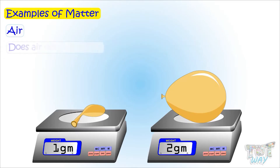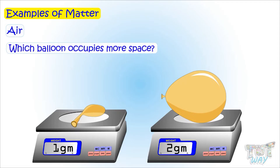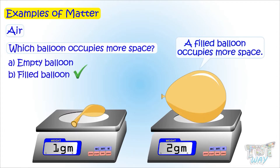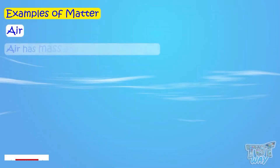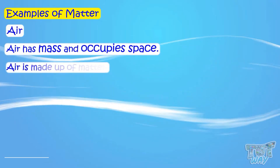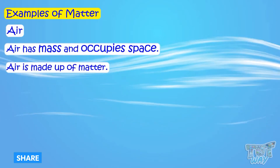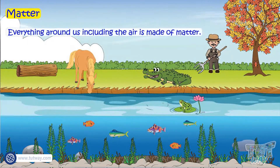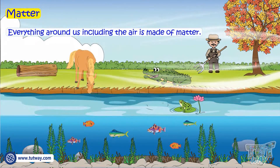Now let's see if air occupies space. Which balloon occupies more space — an empty balloon or a filled balloon? A filled balloon occupies more space. So it means that air occupies space too. So air has mass and occupies space — so we can say air is made up of matter. Now we know matter is anything that has mass and occupies space, and everything around us, including the air, is made of matter.